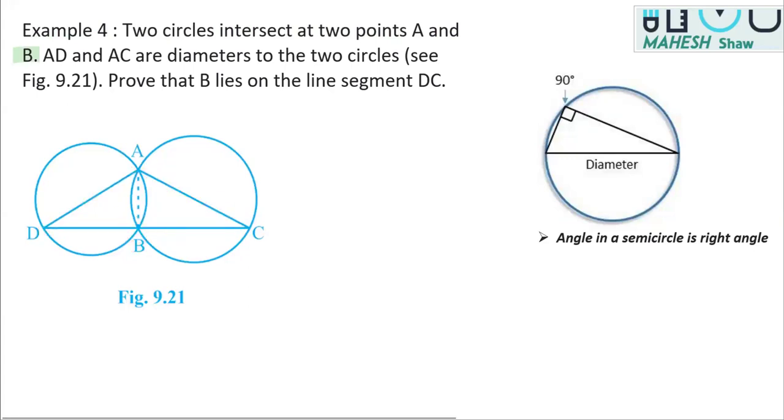You know that this point B will lie on DC if you can prove that DBC is a line. We have to prove that D, B, and C are collinear, and that is possible when you prove that DBC is a line.